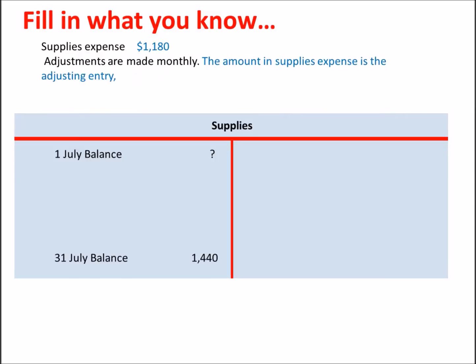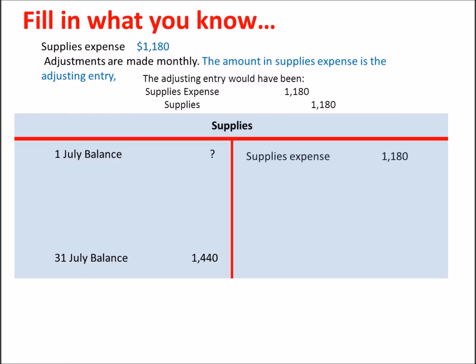You were told that supplies expense is $1,180 and that was the adjusting entry at the end of the month. What would that entry have been? It would have been a debit to supplies expense and a credit to supplies, as we reduced the supplies account for what had been used. So we will post that to the supplies account.